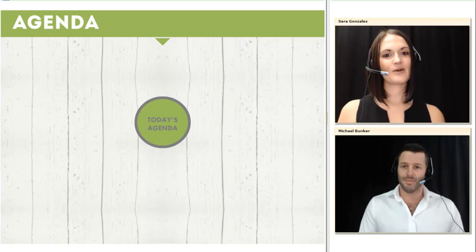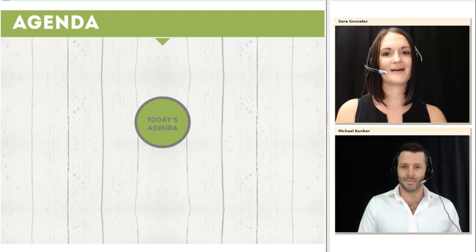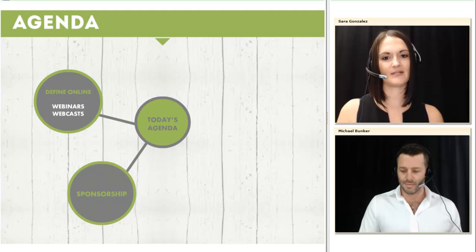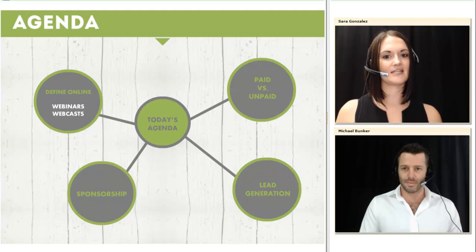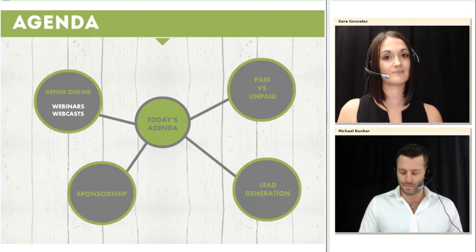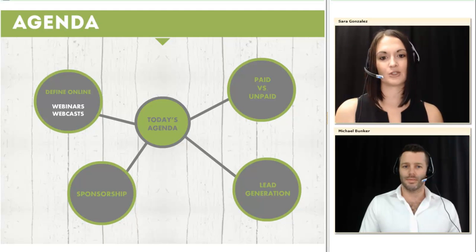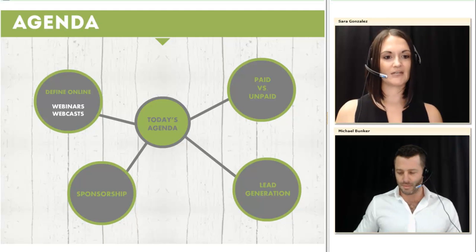I just want to set the agenda quickly based on what you all registered for and give you an overview of what we'll be delving into over the next 30 to 45 minutes. Firstly, I want to define online events as webinars and webcasts, and then go into the three main ways of making money from online events: sponsorship, lead generation, and paid versus unpaid.